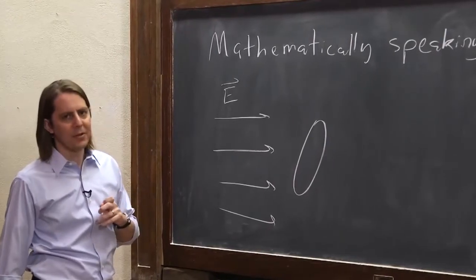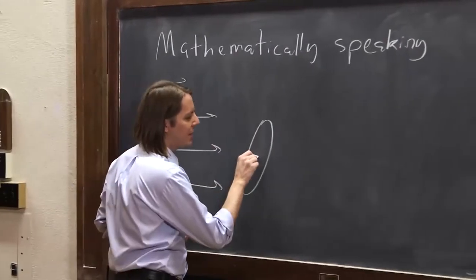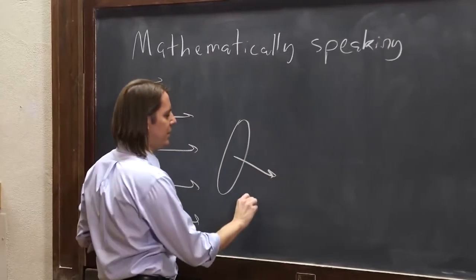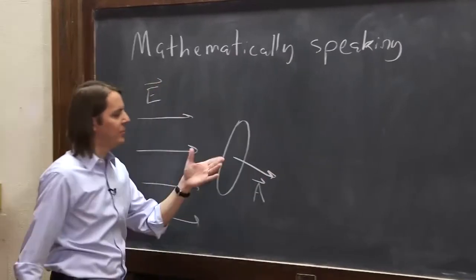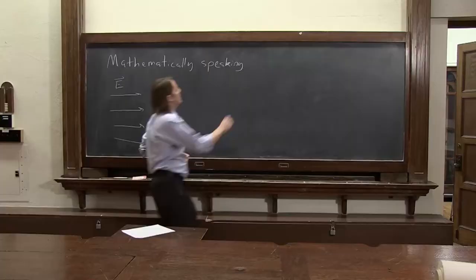What we have to do mathematically is, basically, the area has to be a vector. If we're going to capture the strength of this and the angle in between, we have to actually give it something to represent the angle of the area. And the way you do that is you make it a vector.